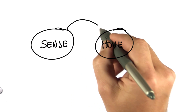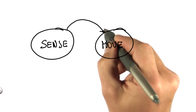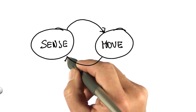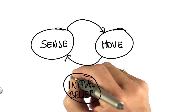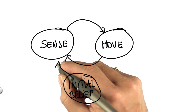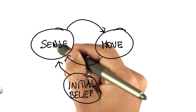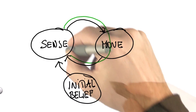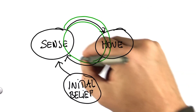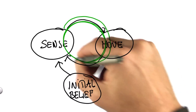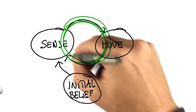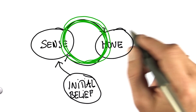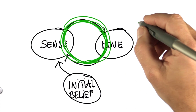Localization is nothing else but the iteration of sense and move. There's an initial belief that is tossed into this loop. If you sense first, it comes to the left side. And then localization cycles through this move, sense, move, sense, move, sense cycle.